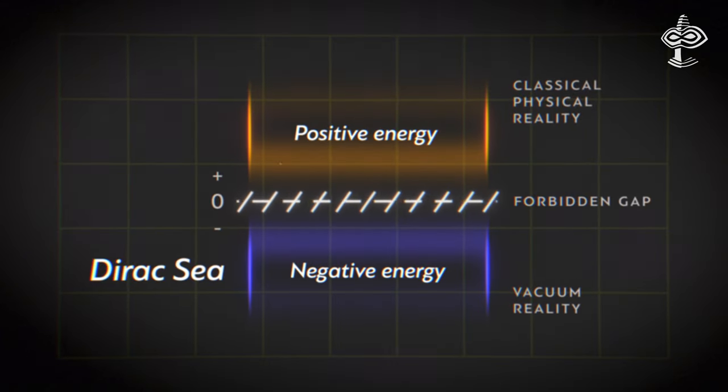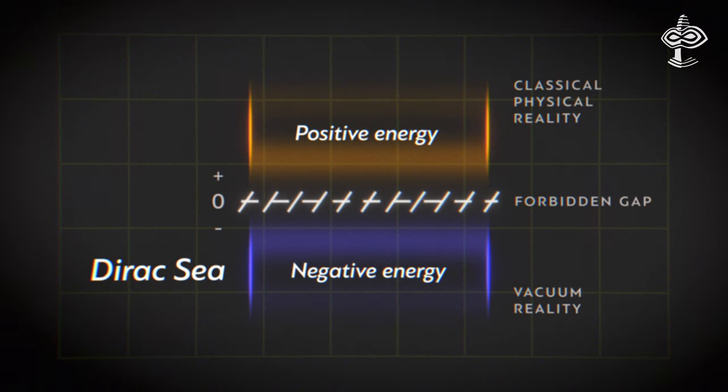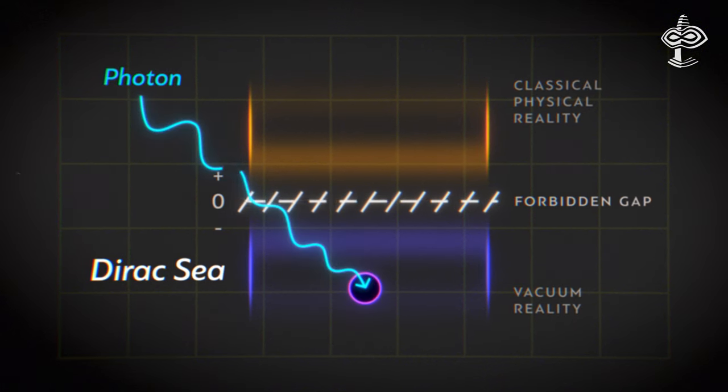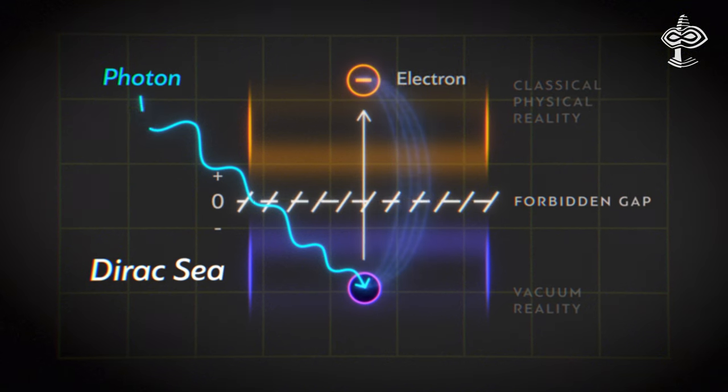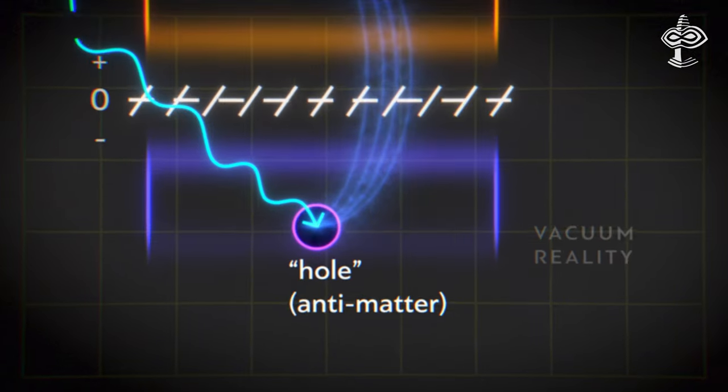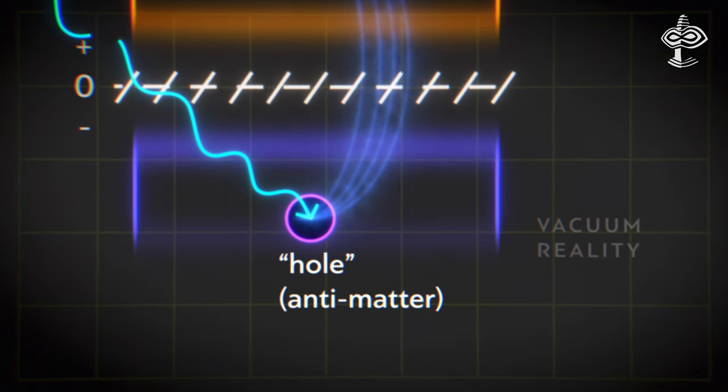Dirac's idea was that if you hit the sea of invisible energy with a strong enough burst of light, an electromagnetic photon, you could knock an electron into the world we can see, materializing it. When the electron gets pushed out, it leaves behind a hole in this invisible energy sea.